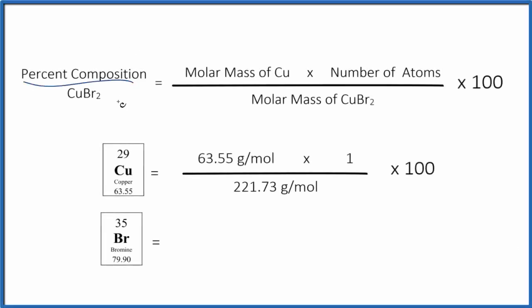Let's find the percent composition by mass for each element here in CuBr2. This is copper 2 bromide.